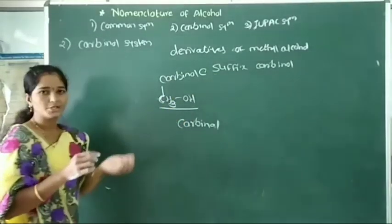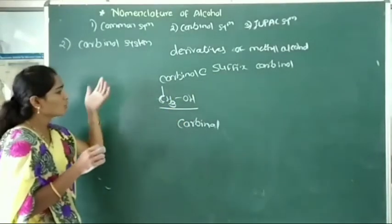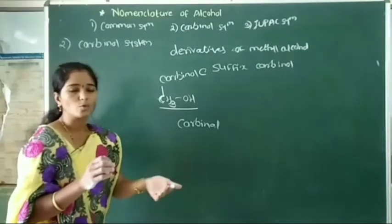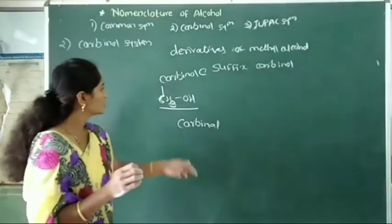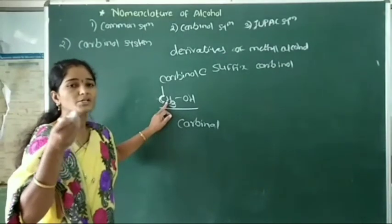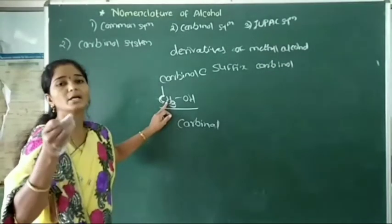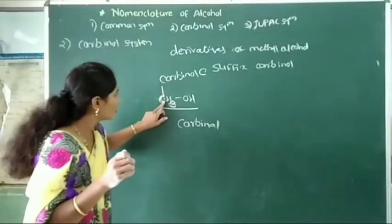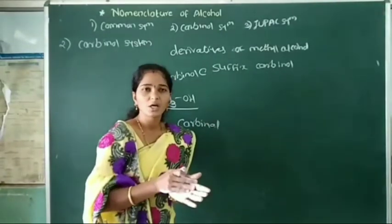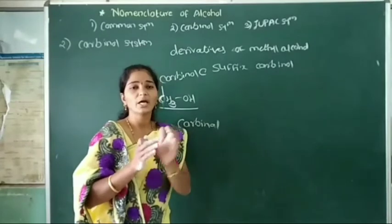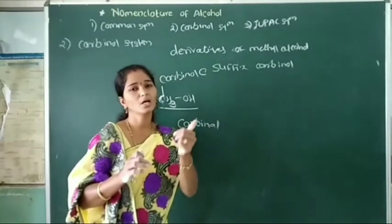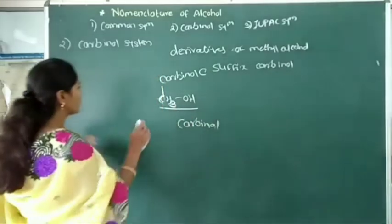In case of nomenclature in the carbynol system, when another alkyl group is attached to the carbynol carbon, we write the nomenclature of the alkyl groups attached according to alphabetical order. Let us see one example.